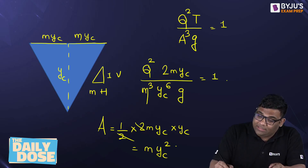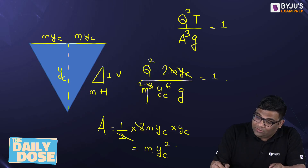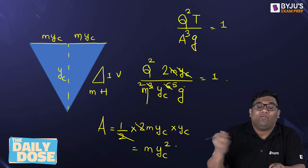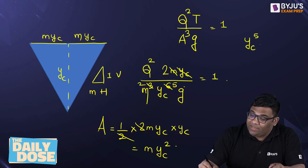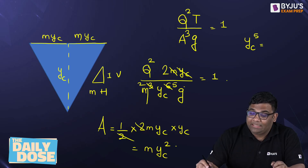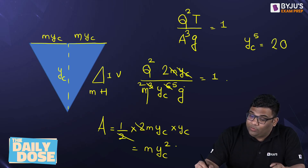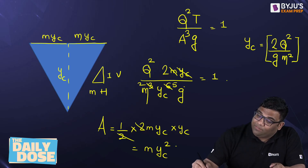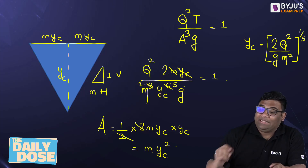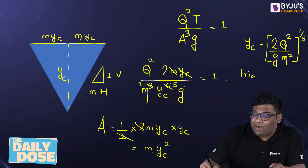Then what will happen — this m gets cancelled, and I get a squared term here. And this yc gets cancelled, I get yc to the power 5. So from this I get yc to the power 5 is equal to 2q squared by g m squared. Now yc will be this particular expression to the power 1 by 5. This equation is applicable for a triangular section.